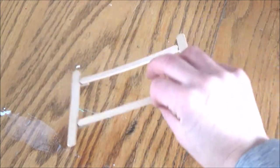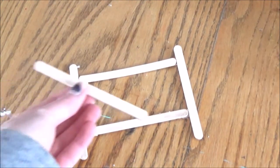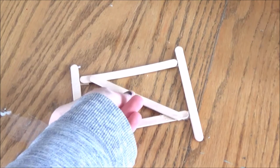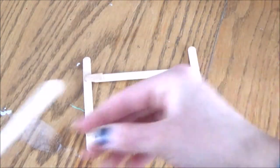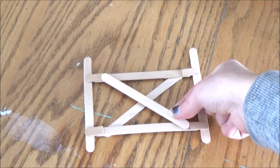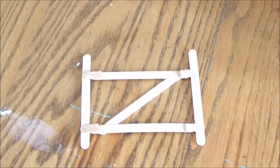Next you can take another one and glue it across the center and then if you choose you could flip it around and glue another one on the other side but I decided not to do this because I was running out of popsicle sticks.